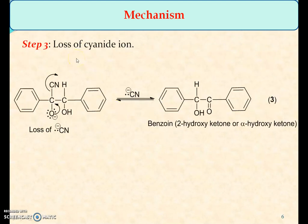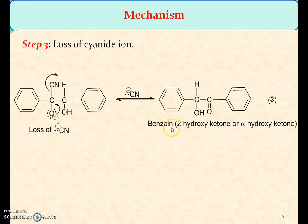In the last step, the cyanide ion eliminates with the shared pair of electrons. At the same time, the lone pair of electrons is shifted towards the adjacent carbon atom to generate benzoin, which is also known as 2-hydroxy ketone or alpha-hydroxy ketone.